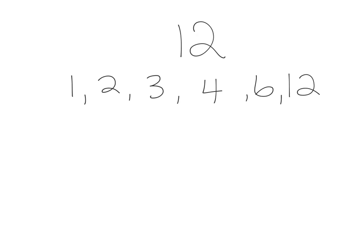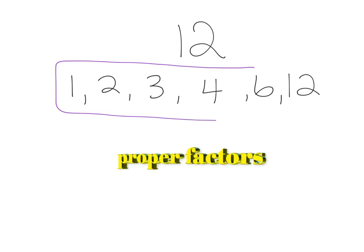For the purposes of finding abundant, deficient, or perfect numbers, we need to look at something called proper factors. Proper factors are all of the factors except for the number itself. So in the case of 12, all of the proper factors would be 1, 2, 3, 4, and 6, but not 12.